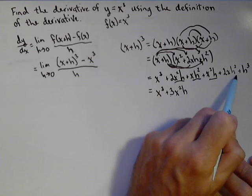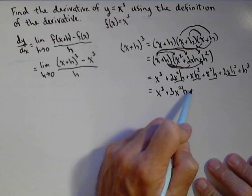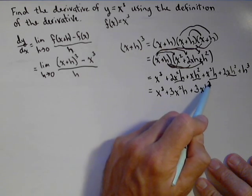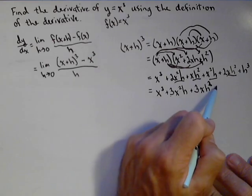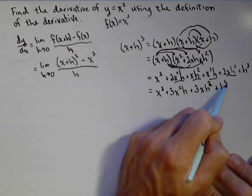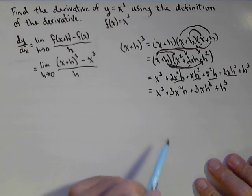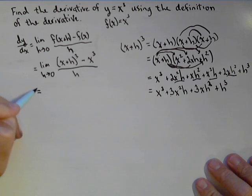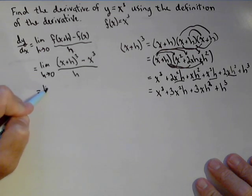Now I'm going to have two xh squared terms, so plus three xh squared. Because one of them here and two of them there gives us three. And then finally, plus h cubed. So there's our simplification.